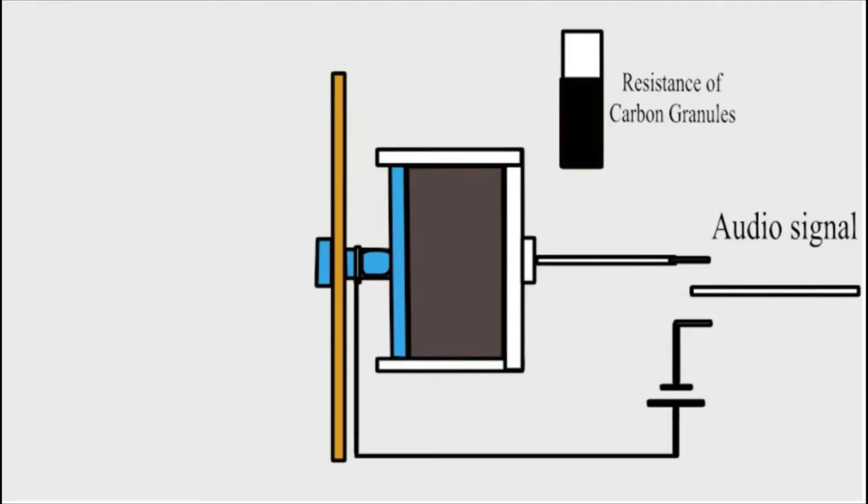So, this is the diagram of the carbon microphone. This right here is the diaphragm of the microphone. The diaphragm of the microphone connects to a metal plate. And the metal plate stays in contact with the carbon granules right here. As you can see, there's a battery over here that connects to the metal plate over here.